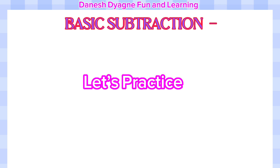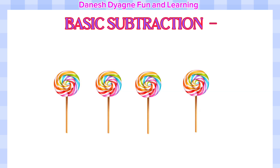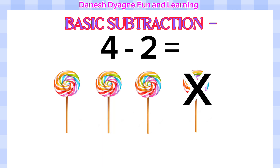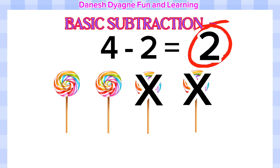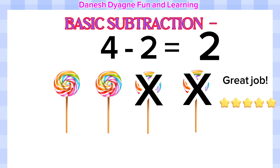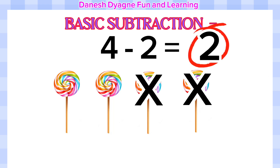Let's practice. I have four lollipops and I want to give two lollipops to my best friend Chloe. We're going to write four minus two. How many lollipops are left if I give two to Chloe? Let's remove two lollipops by putting an X: one, two. How many lollipops are left? Can you tell me? Great job! Two lollipops left. Four minus two equals two.